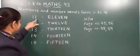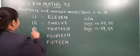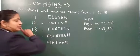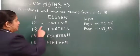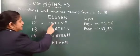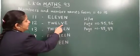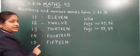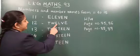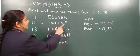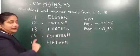Now eleven ke baad konsa number ae ga? One two — twelve. Now one two, twelve. What is the number name of twelve? T, W, E, L, V, E. Once more: T, W, E, L, V, E — twelve.